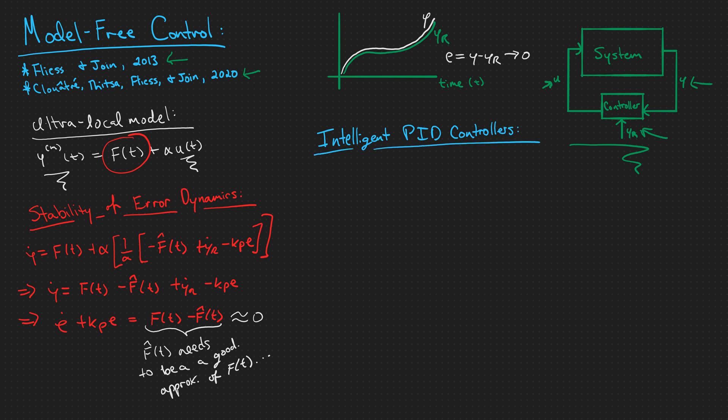Last up, I'd like to talk about intelligent proportional integral derivative controllers, one of which we have already defined for our ultralocal model of order one. So, if m is equal to one, we said that our control input to the system would be one over alpha times minus f hat of t plus y sub r dot minus kp times the error. This is called an intelligent proportional controller, or an IP. And that is because we have a proportional term and we have a numerical approximation, f hat of t, that updates the system in real time. That's why we call it intelligent.